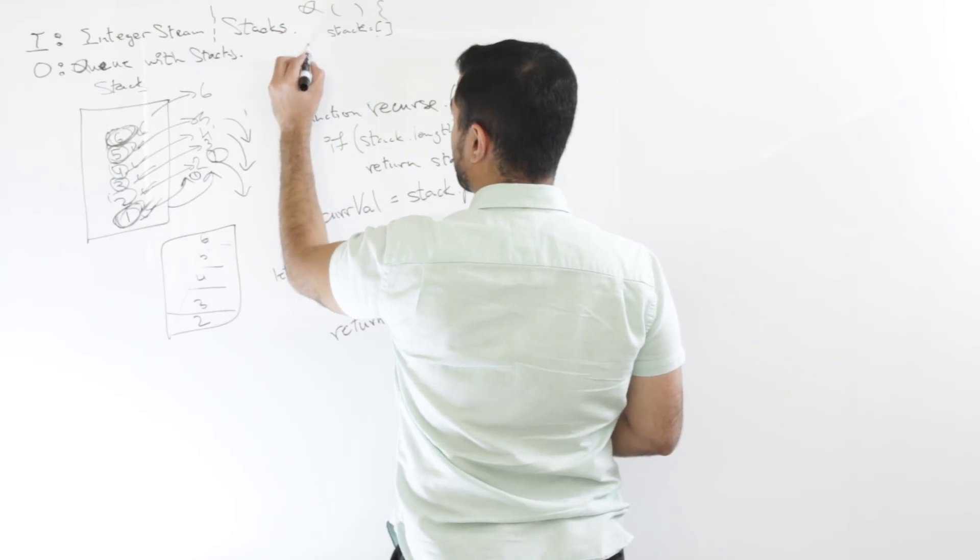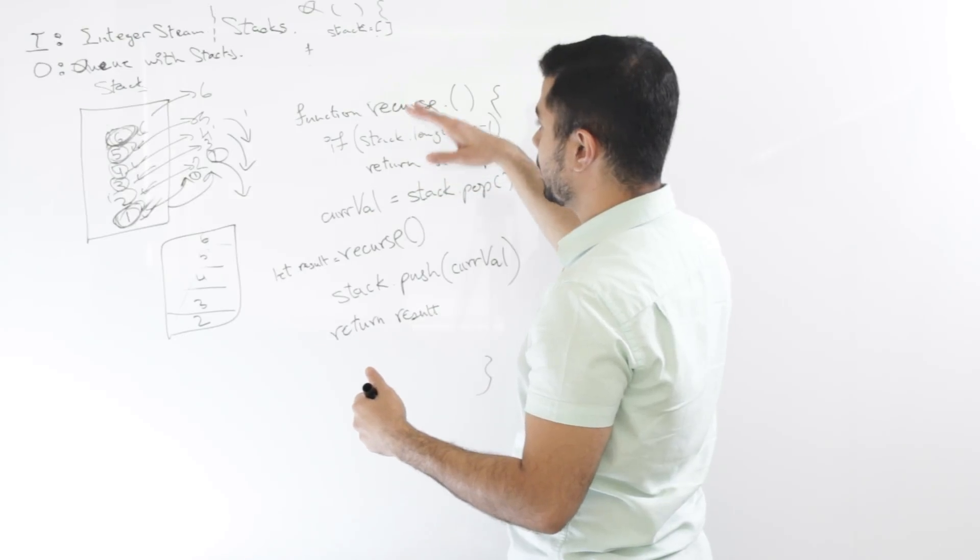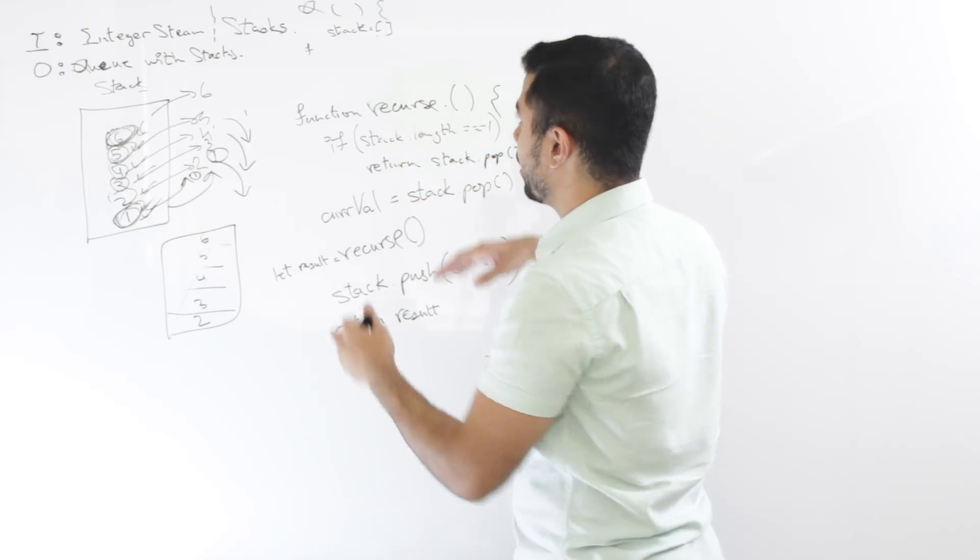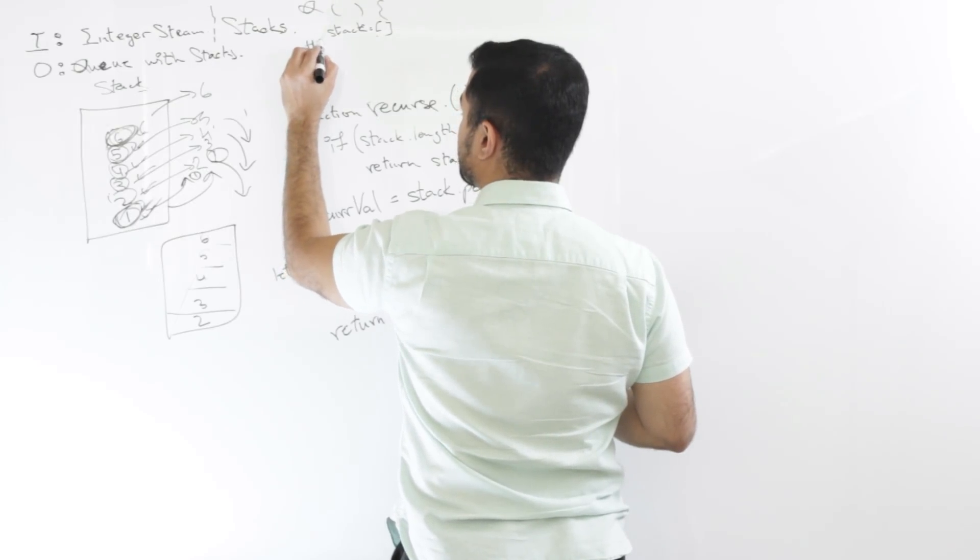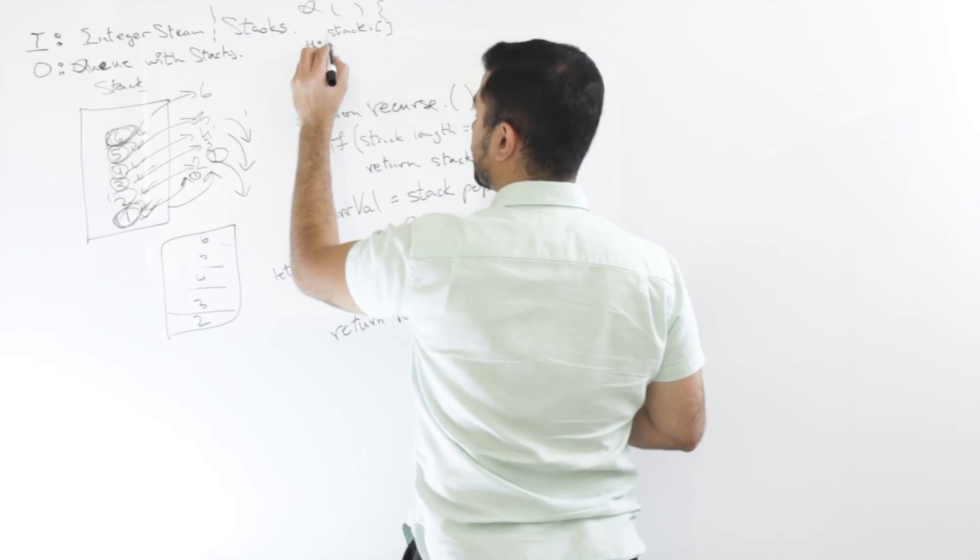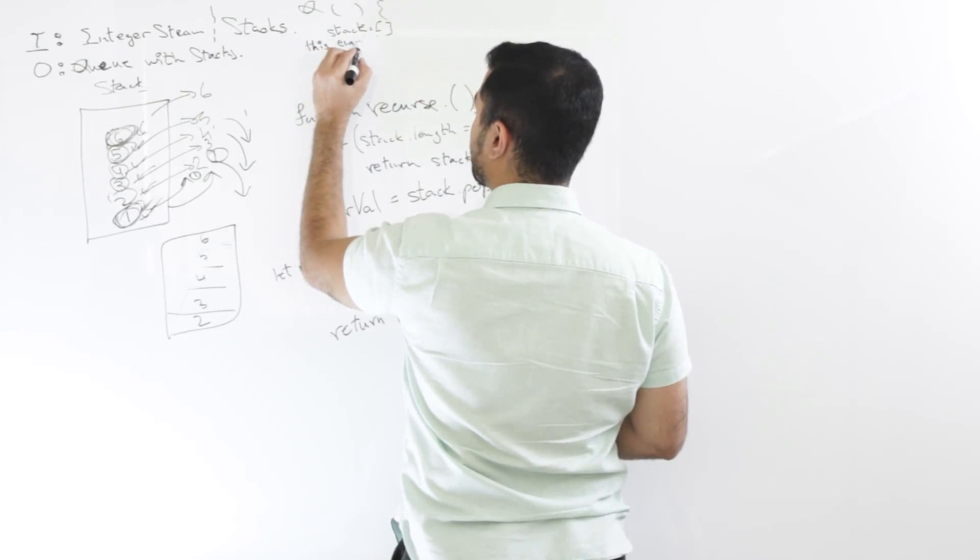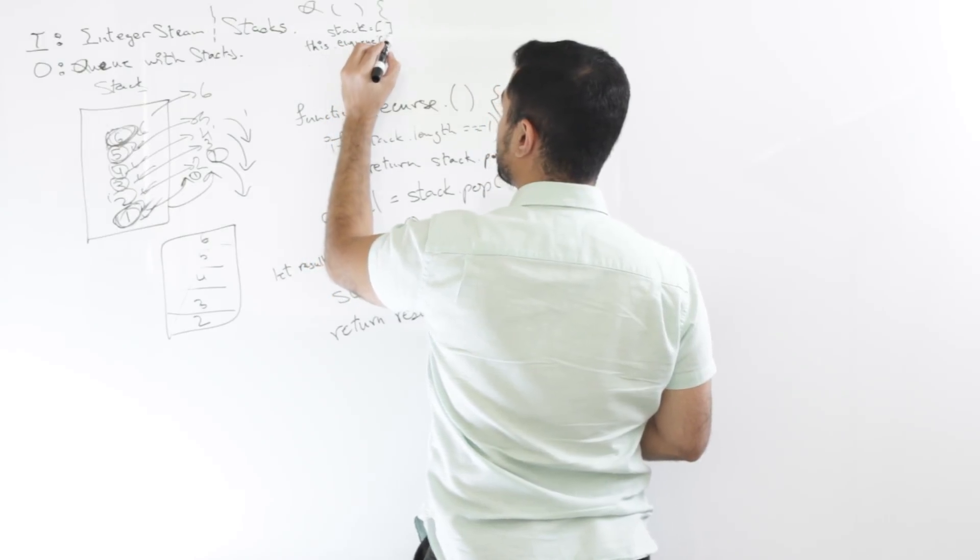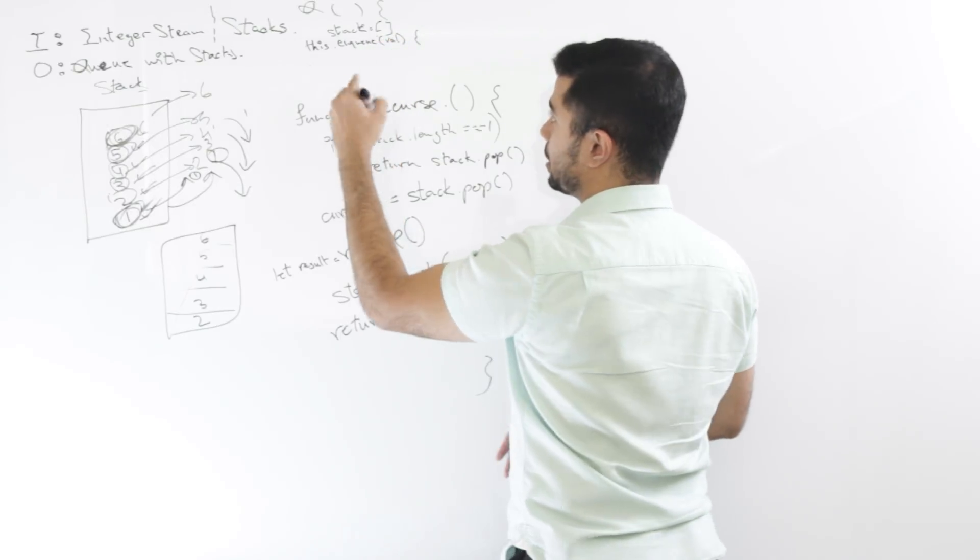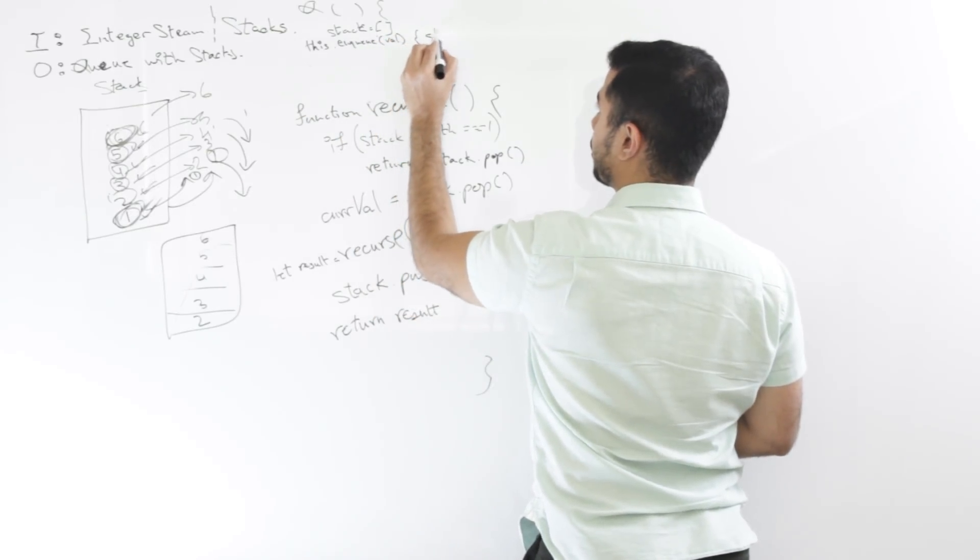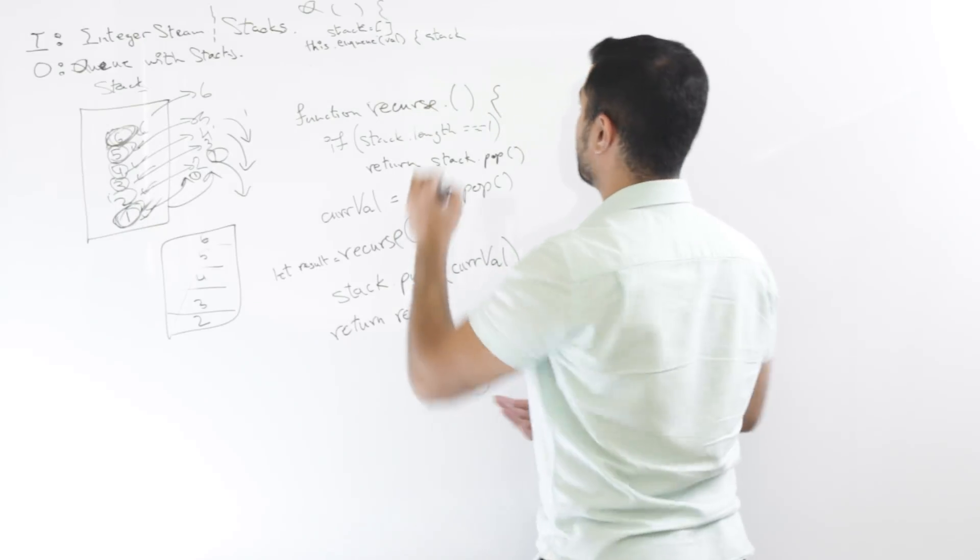Mm-hmm. Now, I have another function that says, let's say this is, yeah, this is a recurse function. Let's say I have this dot, so it's basically an instance function. This dot enqueue would basically take the value. Mm-hmm. And what it'll do is it'll just say stack, stack dot push. Mm-hmm. Let's say stack dot push value.